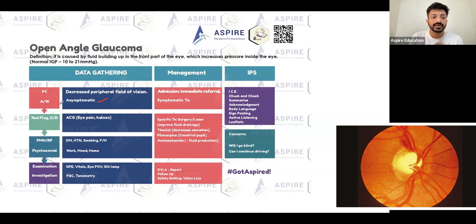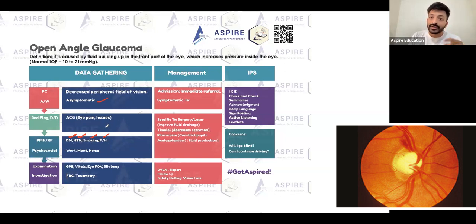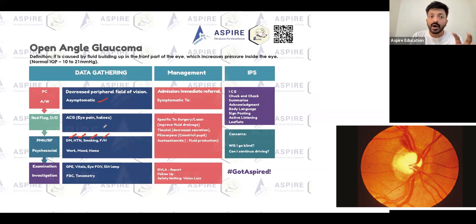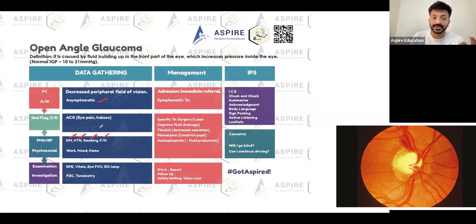Regarding risk factors and past medical history, cover diabetes, high blood pressure, and smoking. Family history is really important — patients with a family history should definitely go for a routine eye checkup with an optometrist. Even when diagnosing someone with open angle glaucoma, we recommend their family members get eye checkups as well. Psychosocial history should include how things have impacted mood, home life, and work.